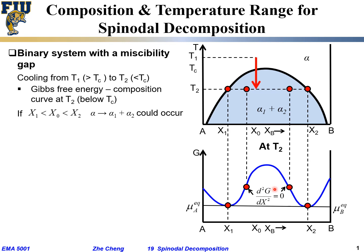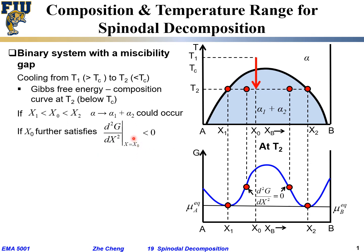Between the inflection points the curvature is concave down. If our composition x0 is between these inflection points, it is in the concave-down section, which means the second derivative of Gibbs free energy with respect to composition is less than zero — d²G/dx² < 0.